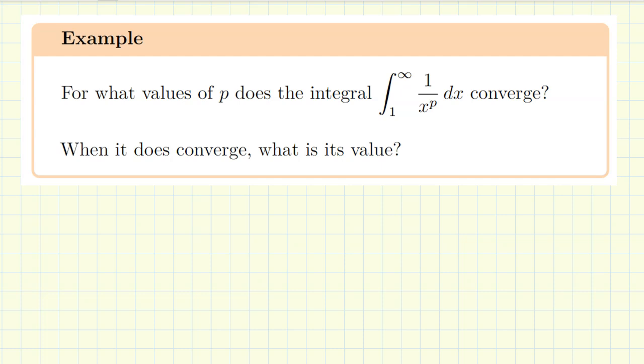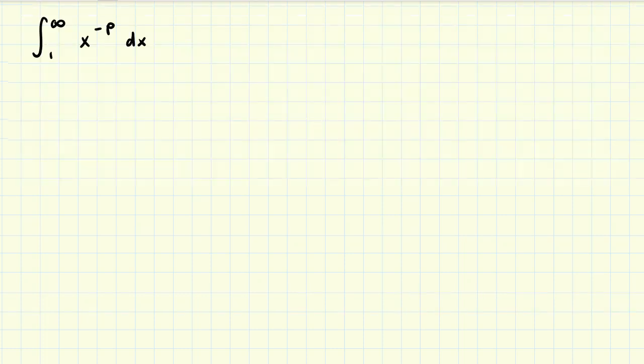This example asks: for what values of p does the integral from one to infinity of one over x to the p power dx converge? When it does converge, what is its value? The integrand can be rewritten as x to the negative p power. We're going to break our scenario up into two cases.